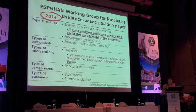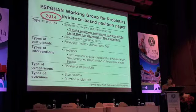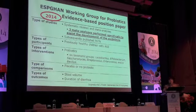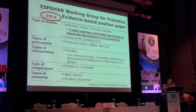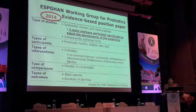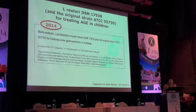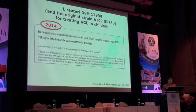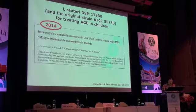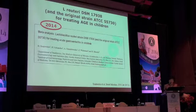We looked at subsequently published randomized controlled trials. We are only interested in previously healthy children with acute gastroenteritis. We looked at studies in which probiotics were well-defined and compared with placebo or no probiotic. The two primary outcome measures important to us were stool volume and duration of diarrhea. One of the three meta-analyses focused on Lactobacillus reuteri DSM 17938 and the original strain ATCC 55730, looking at both strains separately for treating acute gastroenteritis in children.